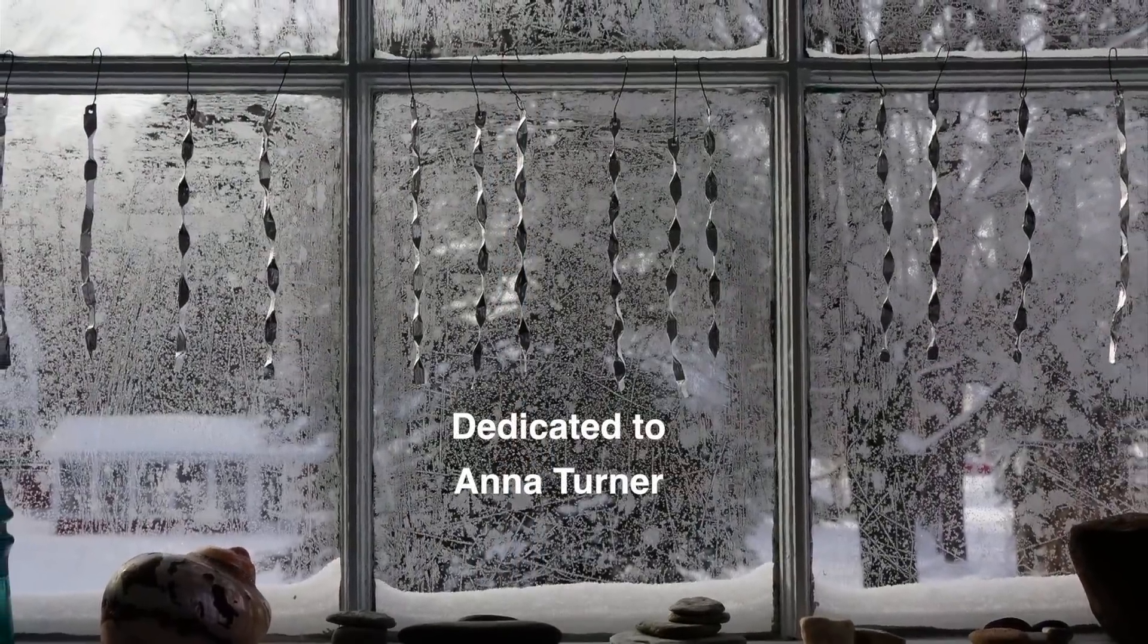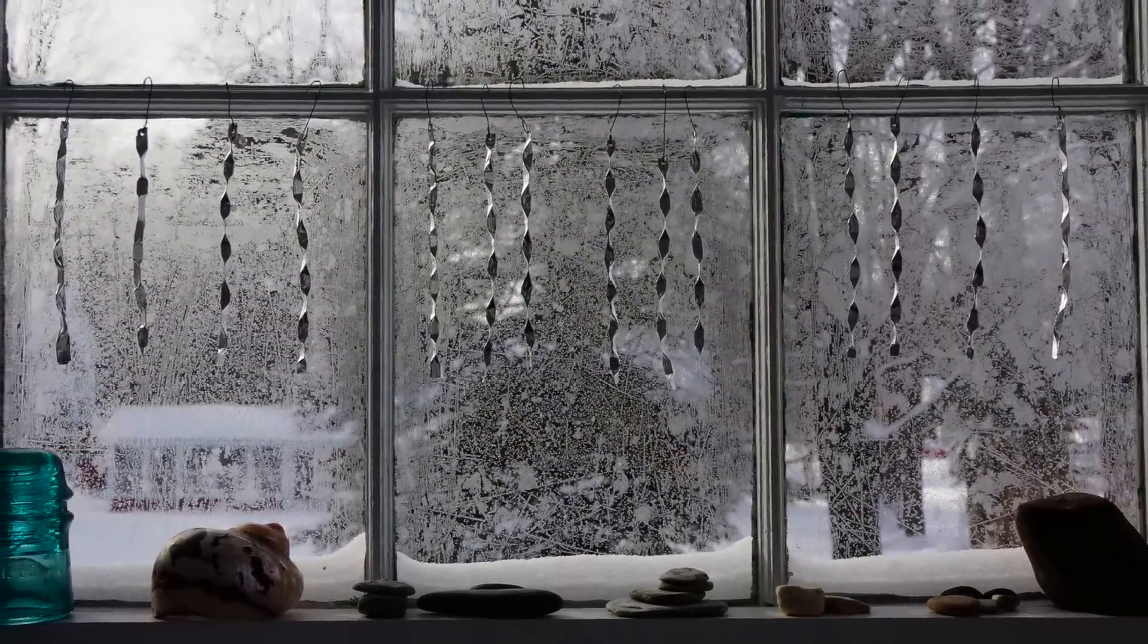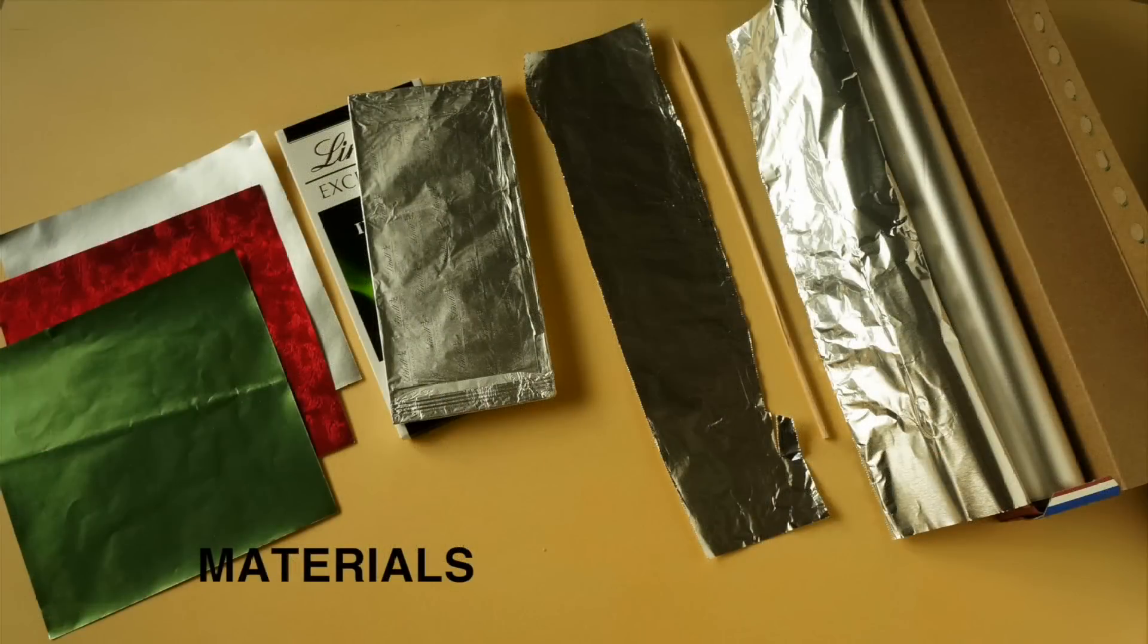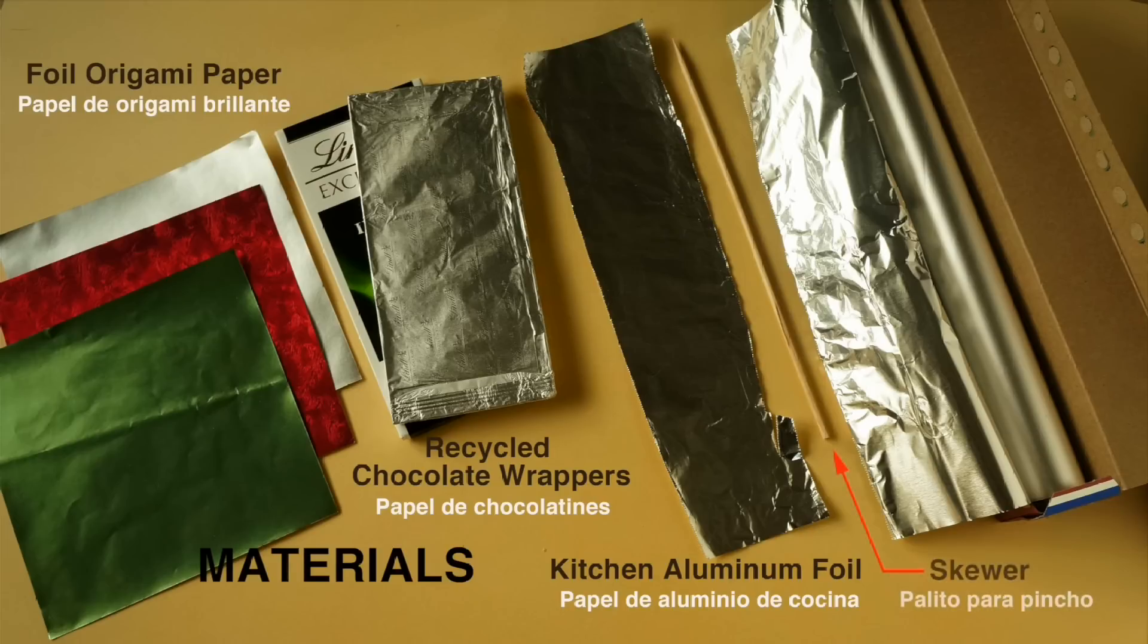This video is dedicated to Anna Turner. To make these ornaments we can use different kinds of paper: origami foil paper is a choice, chocolate wrappers, aluminum foil from our kitchen, and also we need to use a skewer.